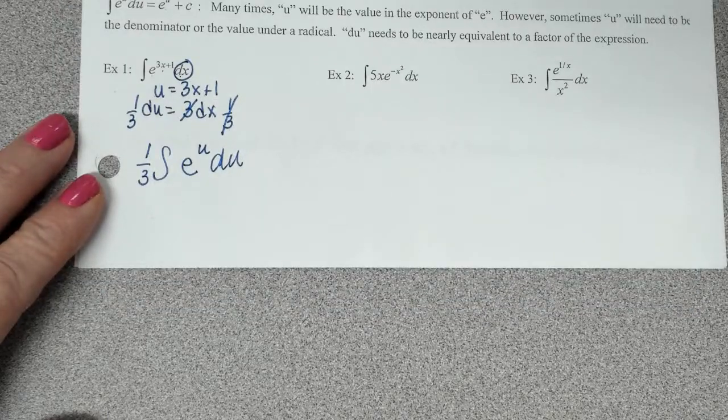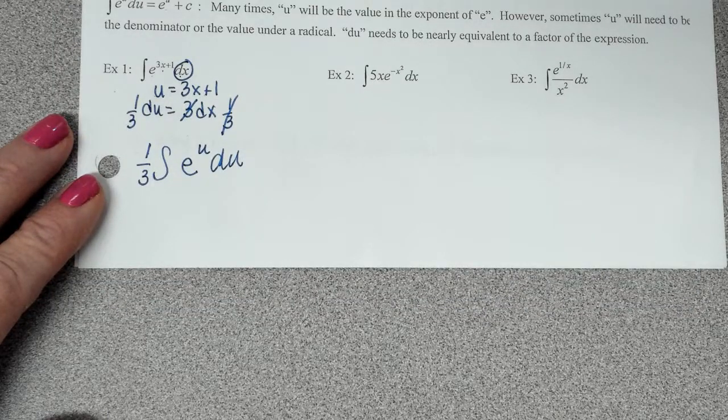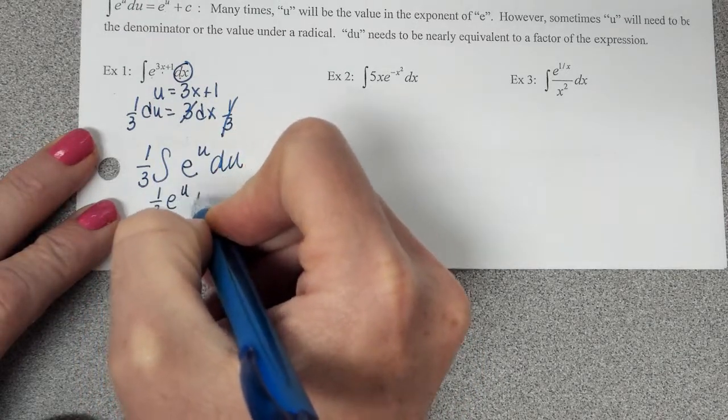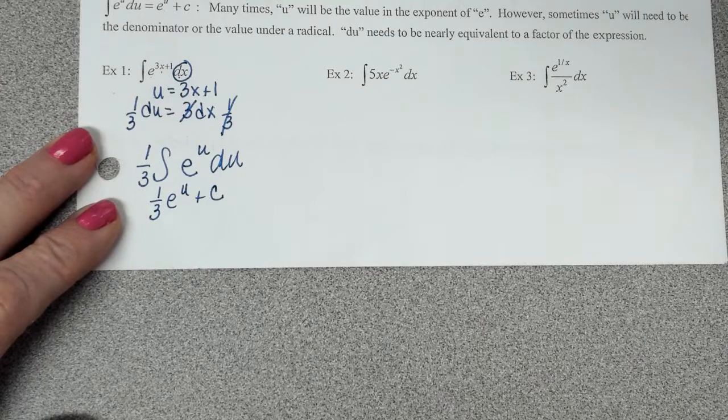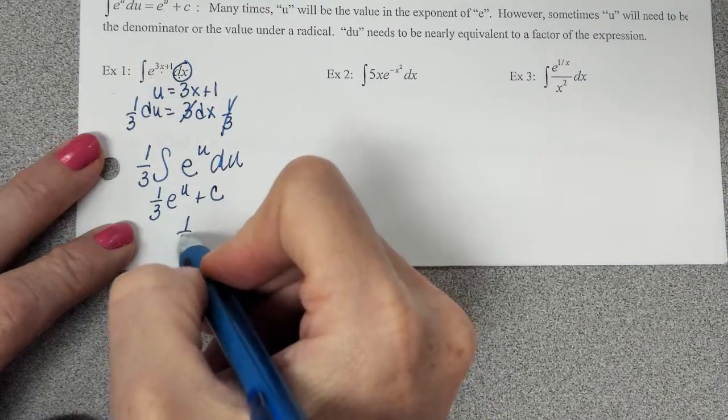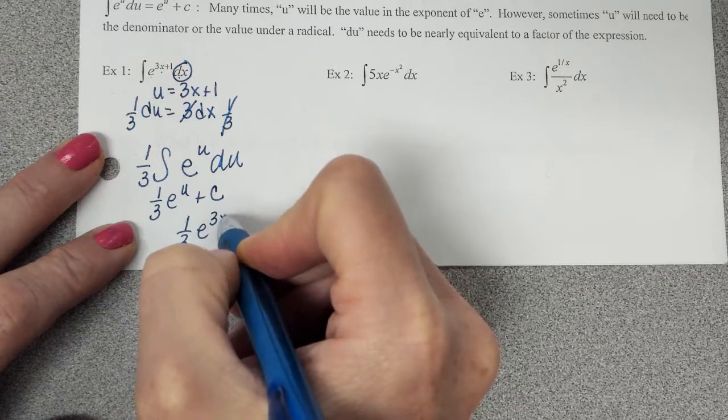So this is what our problem turns into. To integrate e to the u, it's just going to be e to the u plus c. But we don't want to leave u in the problem, so we have to replace the u with 3x plus 1.